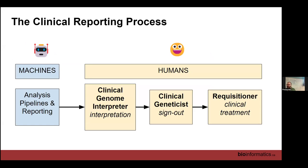So the clinical reporting process — some of it is automated, some of it is not. It starts off heavily automated, done by machines. We have all these analysis pipelines and the GERBA reporting software. We run that with the standard settings to produce a draft report to give us an idea of what variants the pipelines have found. We then review those variants, make sure they're real, and write our interpretation — all of that is a human-driven process.